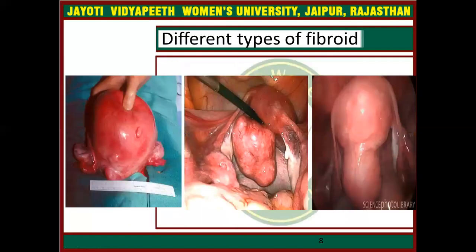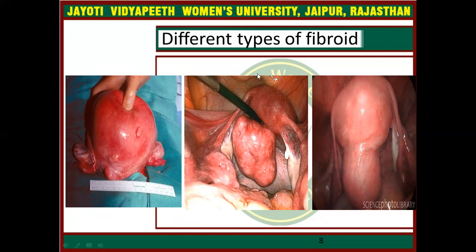This diagram shows the different types of fibroid: submucous fibroid in which the uterine cavity is symmetrically enlarged, subserous fibroid, and cervical fibroid.